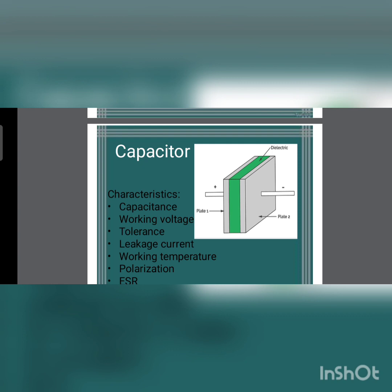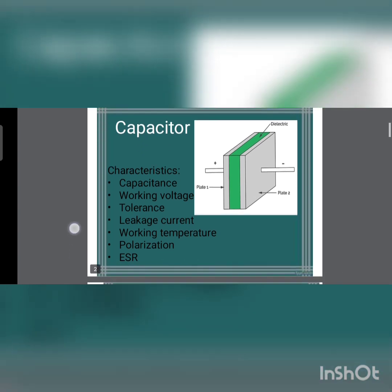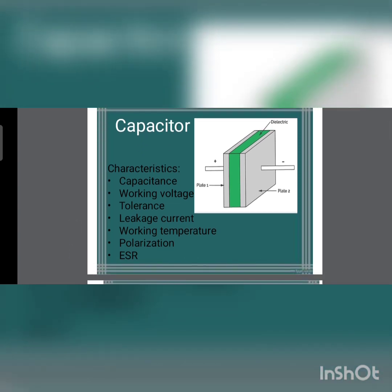A capacitor is an electronic device which is used to store electrical energy. If we talk about the construction, a capacitor has two conductive metal plates and a dielectric is placed between the conductive plates. These plates are normally made up of materials such as aluminum, brass, or copper, which are good conductors of electricity.